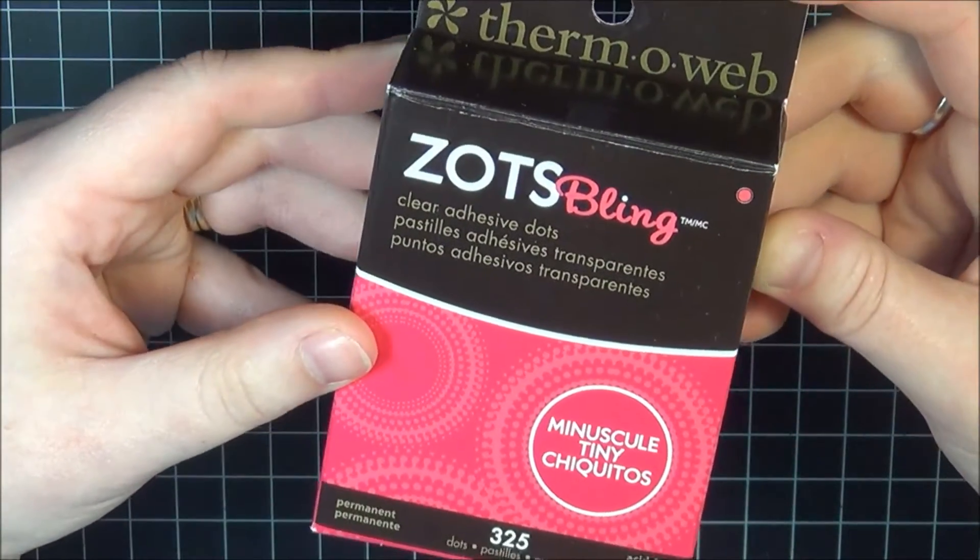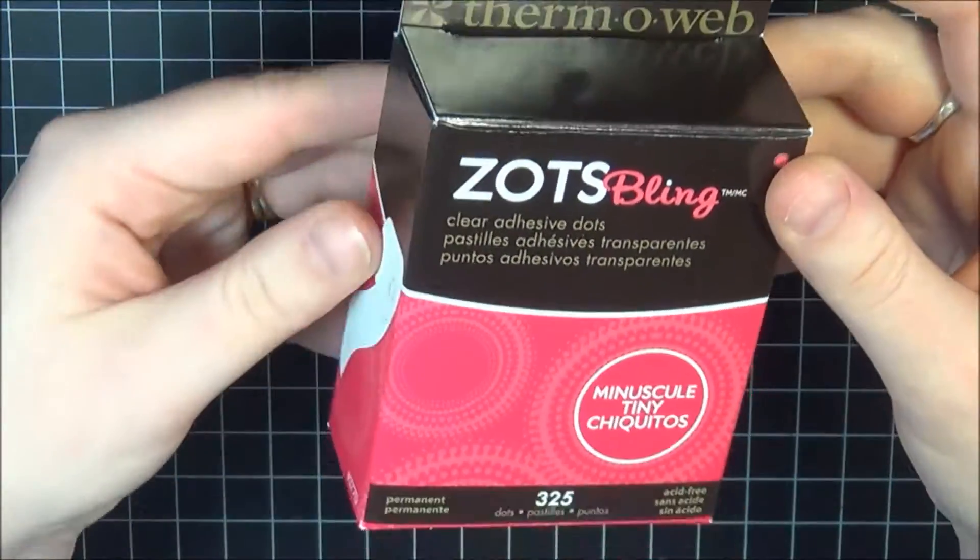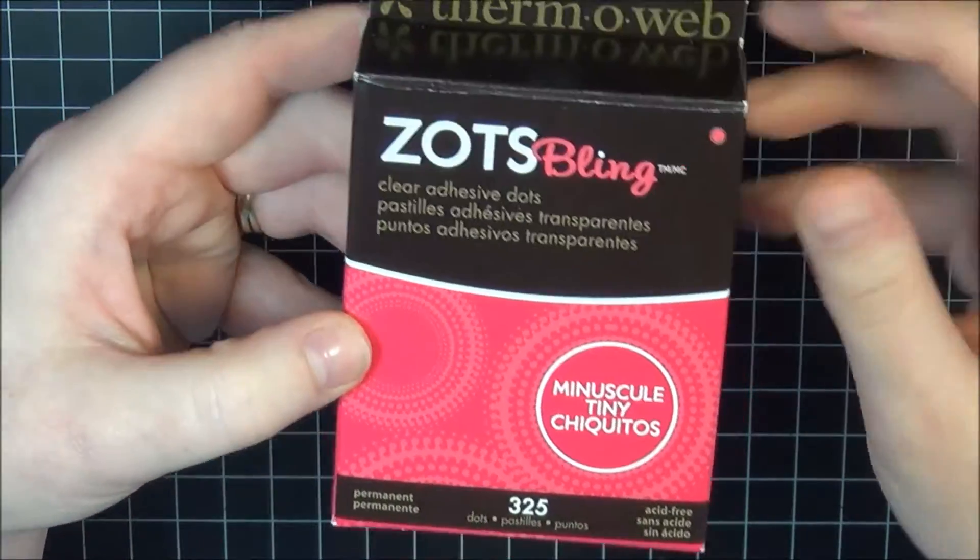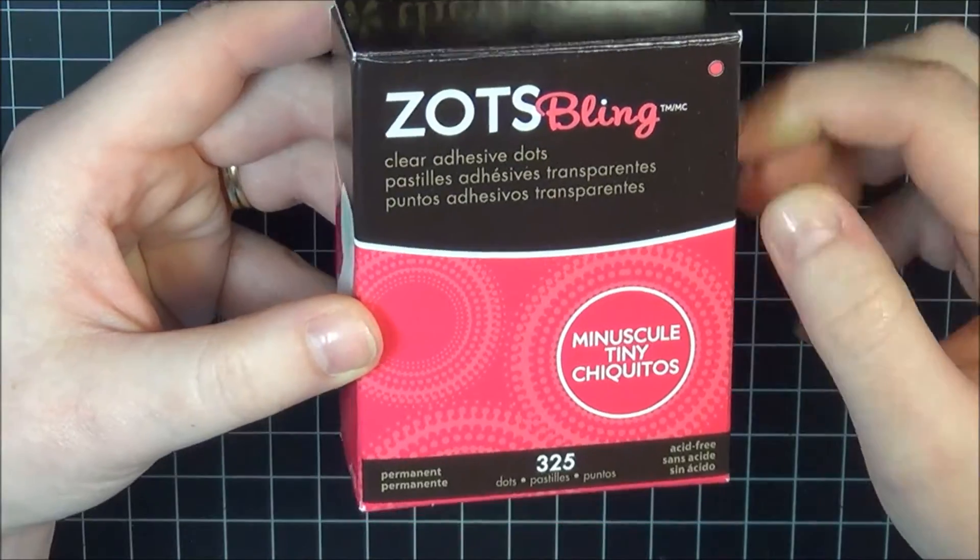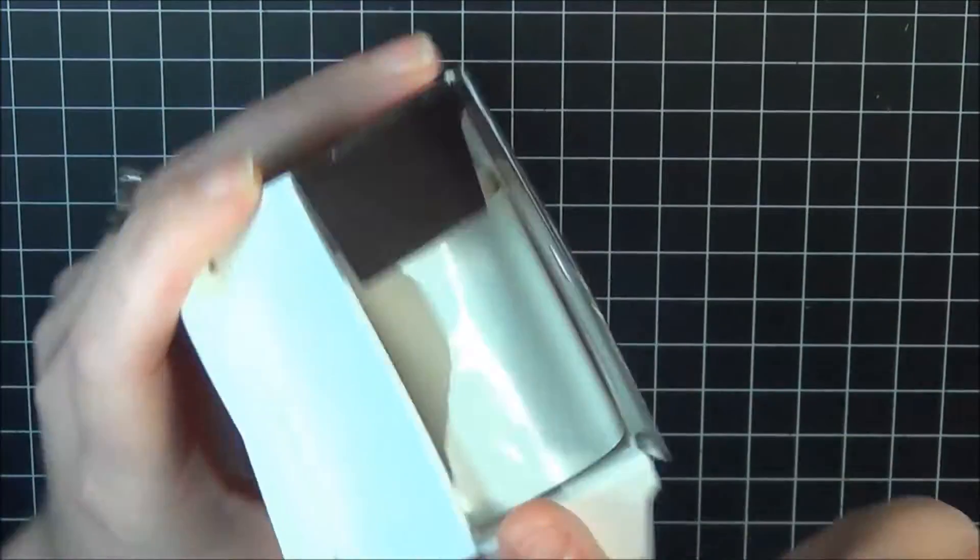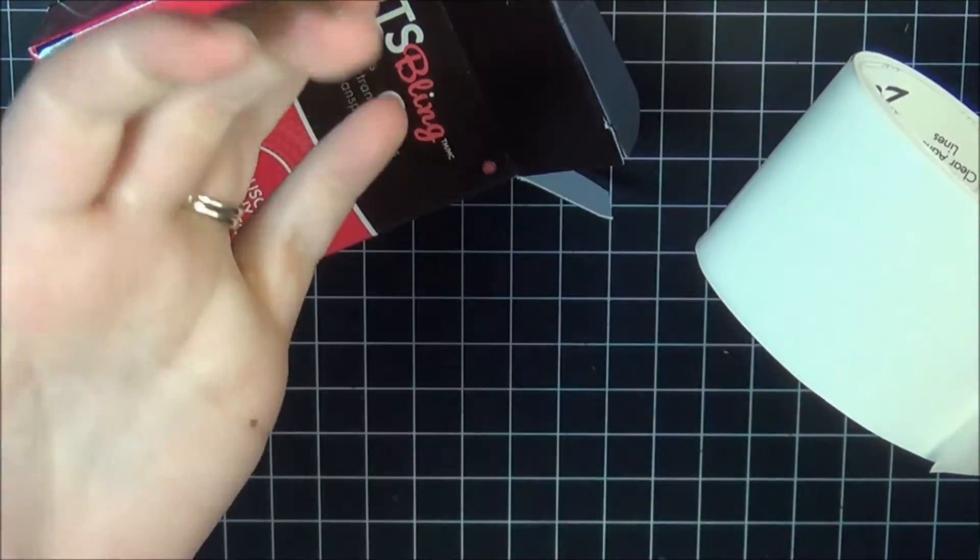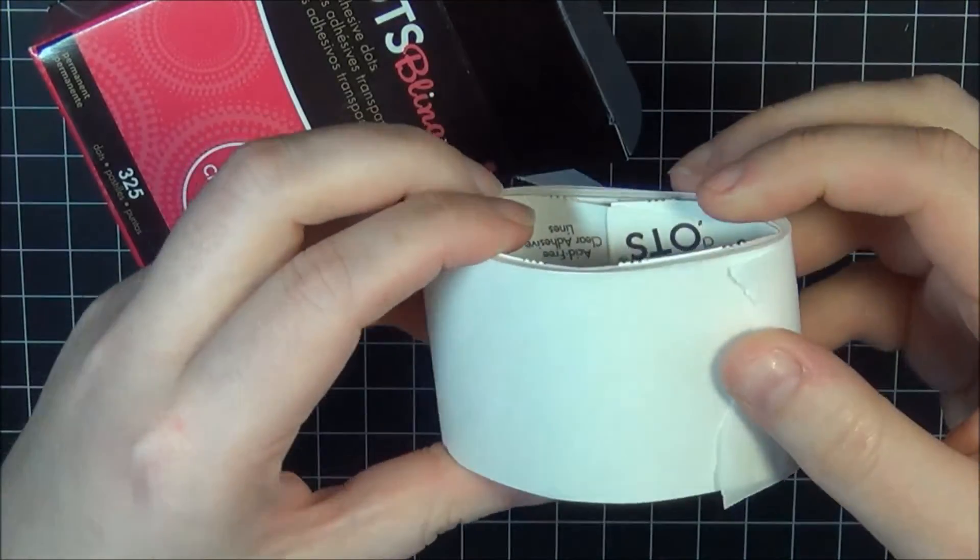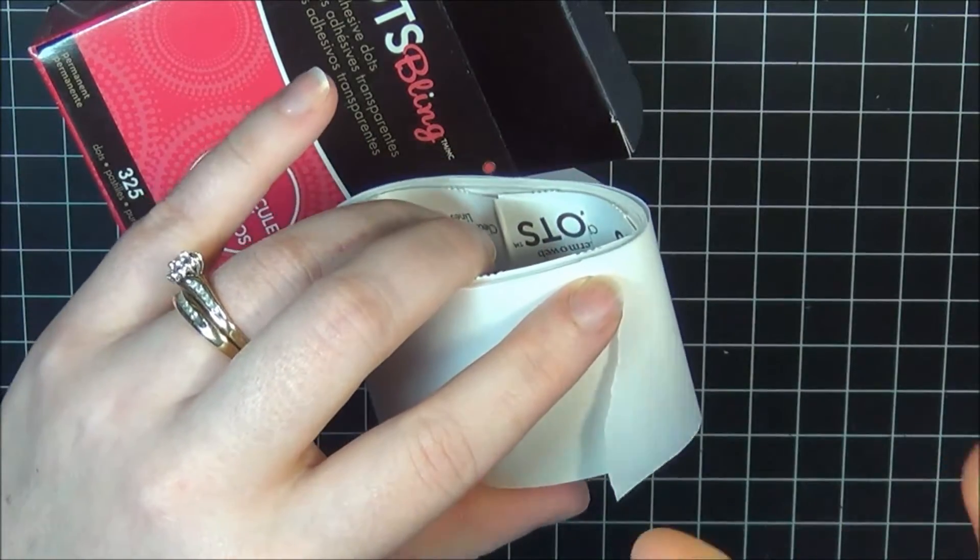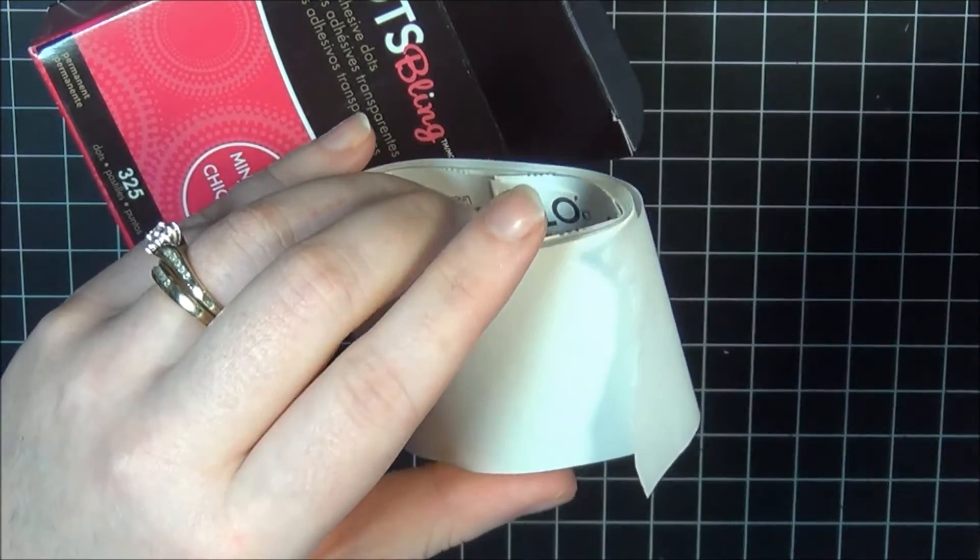Anytime that she applies sequins or any tiny embellishments, she uses the Zotz Bling Adhesive. They are kind of hard to find, so you have to search the web. I found mine off of eBay, I believe. They're perfect for sequins. For the way I craft, I call myself a clumsy crafter simply because I'm not great with the little tiny elements like little sequins or stuff like that. I get so fumble-y with my fingers.